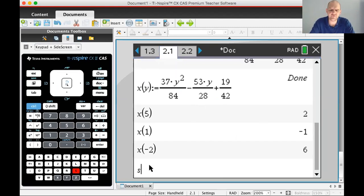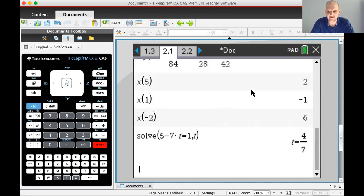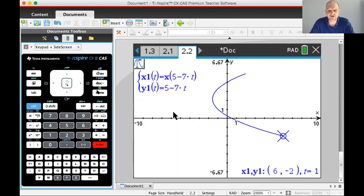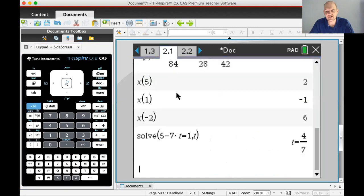What if I want to know when do I get to the point negative 1, 1? So when do I get to the point negative 1, 1? I have two choices. Negative 1, 1 has a y-coordinate of 1. So if I just solve 5 minus 7t equals 1 for t, it gives me t equals 4 7ths. That's when y is equal to 1. So let me trace again. Menu 5, trace. I'm going to type in 4 over 7. And I'm at the point negative 1, 1, which is exactly where I thought it would be.